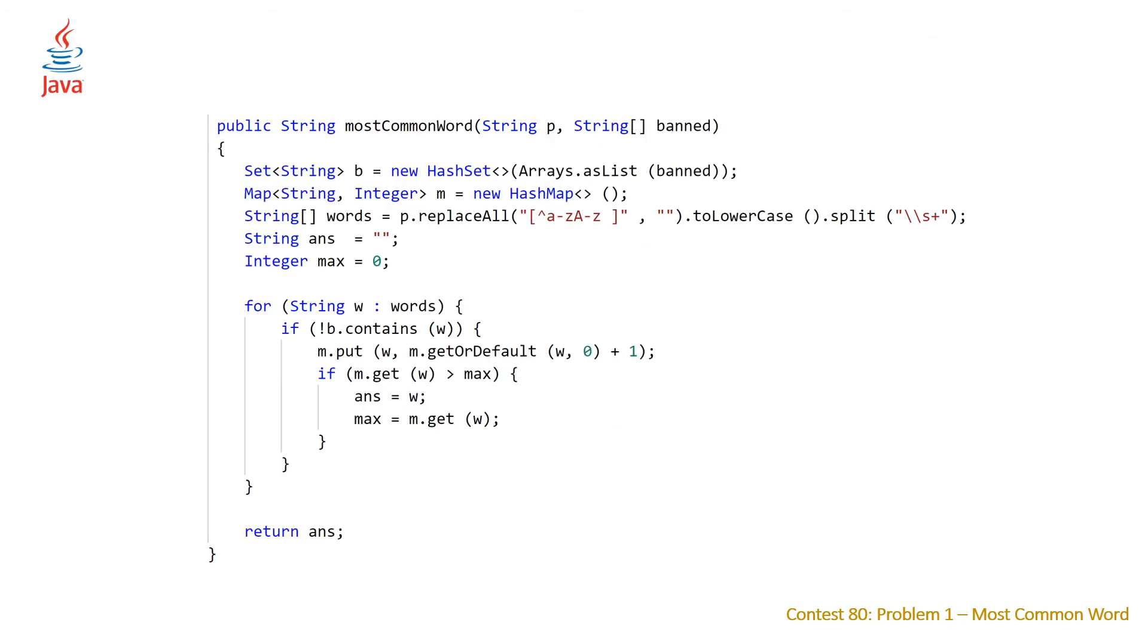So, moving on to our Java solution. So, the Java solution is very similar. Obviously, we're making use of a hash set for our banned words, as well as a hash map to keep track of the words. Java has this nice method called split that you can call on any string, and you can give it the character or sort of a regex expression that you want to split. So, this is just saying any space, one or more. So, the plus means one or more, and the slash slash s is just a space literal.